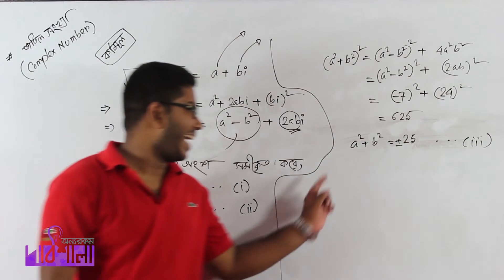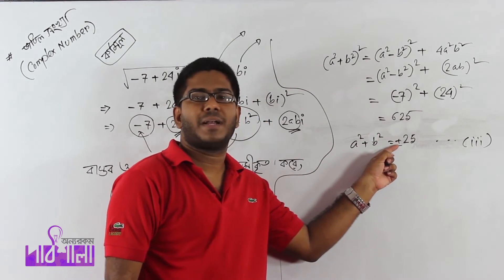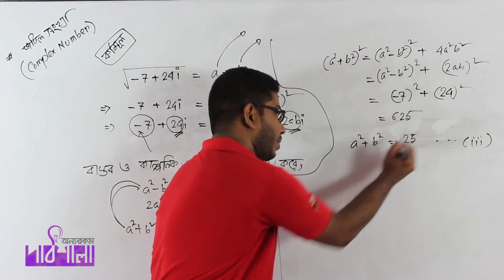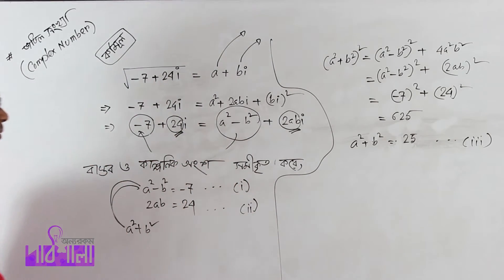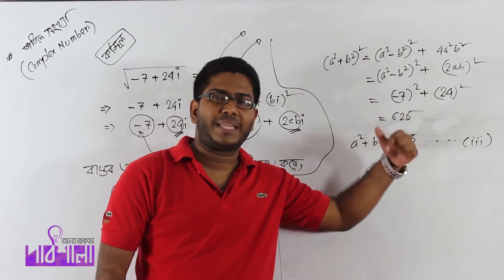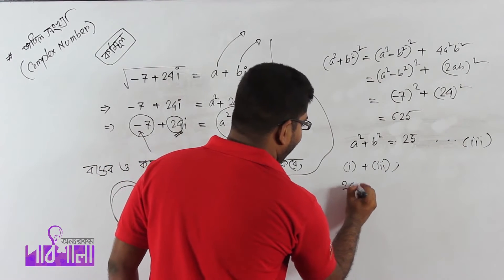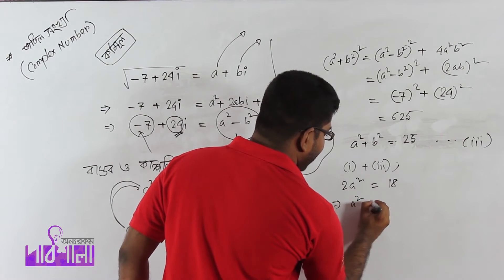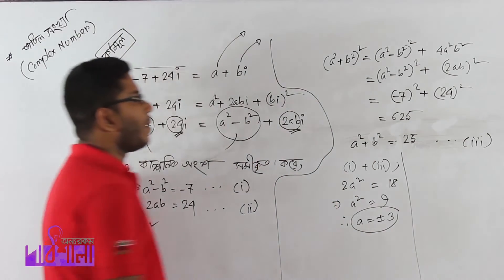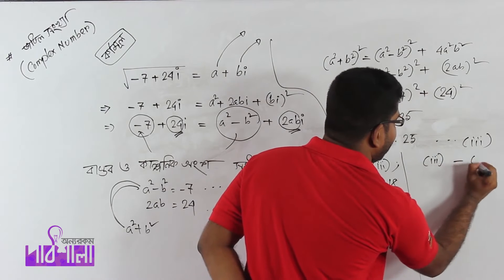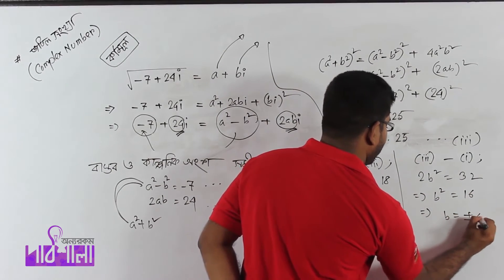Adding equations 1 and 3: 2a squared equals 18, so a squared equals 9, and a equals plus or minus 3. Subtracting: 2b squared equals 32, so b squared equals 16, and b equals plus or minus 4.